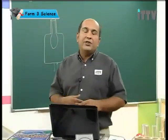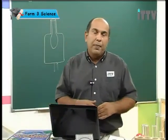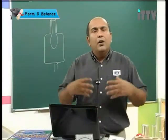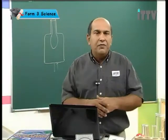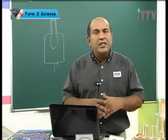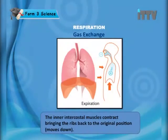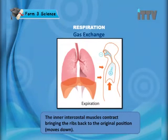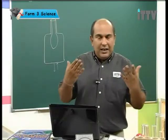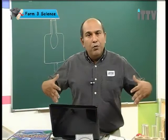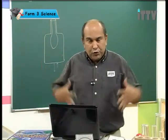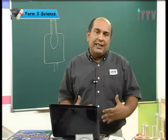Now that we've had a look at inhalation, let's have a look at exhalation. Remember, it is a very much reversed process — everything we did in inhalation is just run backwards. For exhalation, the inner intercostal muscles contract, bringing the ribs back to their original position — moving down. So to exhale, you need to move your ribs down, making this area smaller, and to do this we use the inner intercostal muscles.